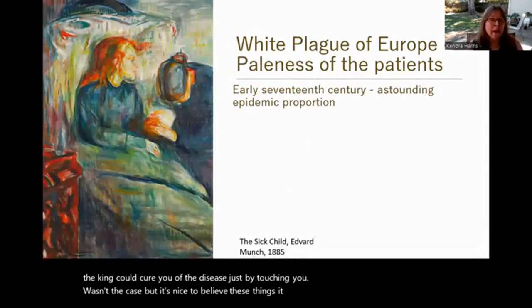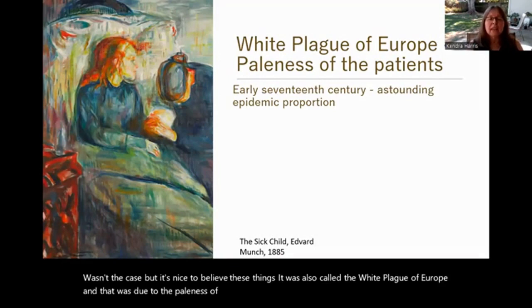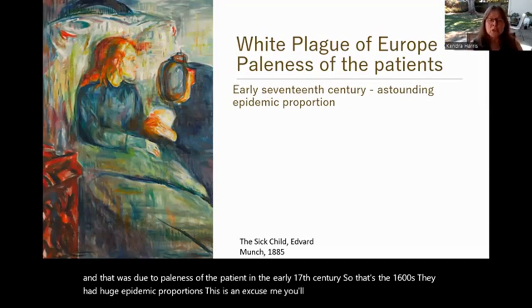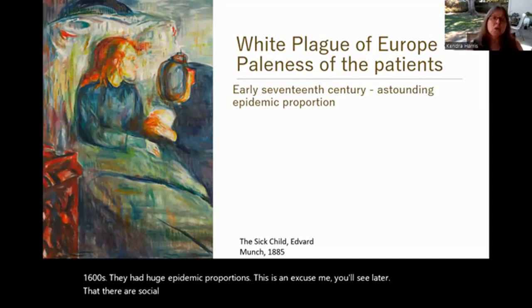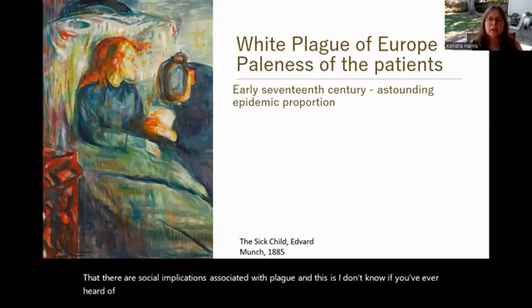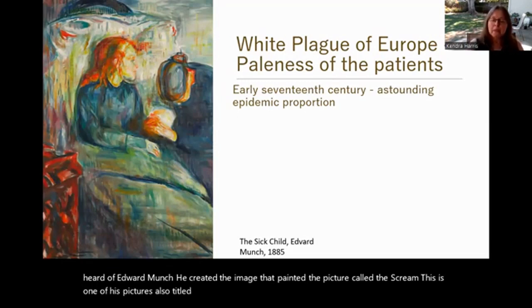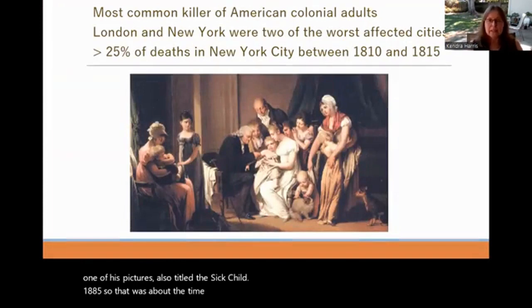It was also called the white plague of Europe, due to the paleness of the patient. In the early 17th century, so the 1600s, it reached huge epidemic proportions. There are social implications associated with plague. This is a painting by Edvard Munch — you may know him from The Scream — this one is titled The Sick Child, painted in 1885, around the time of the epidemic in Europe.